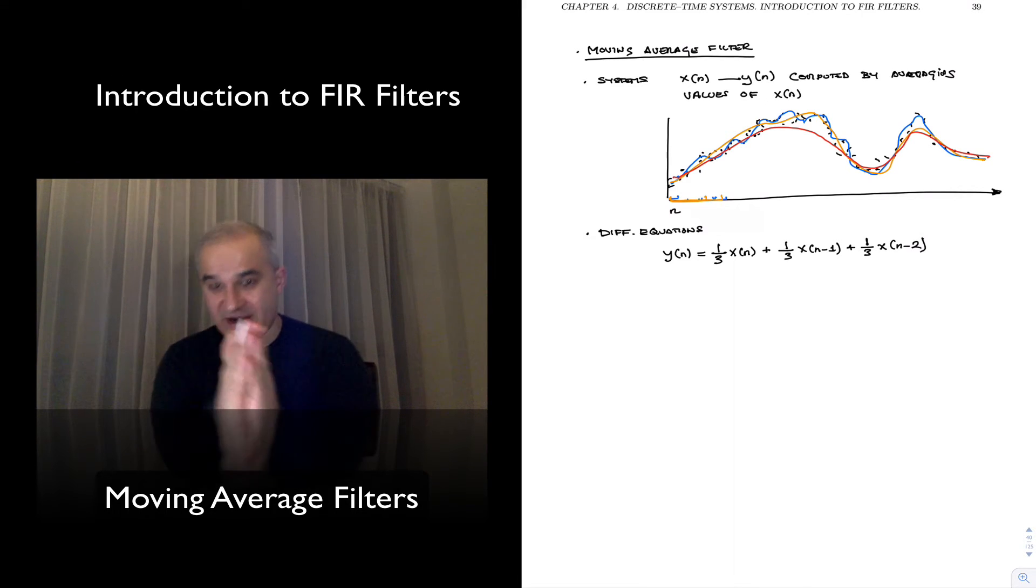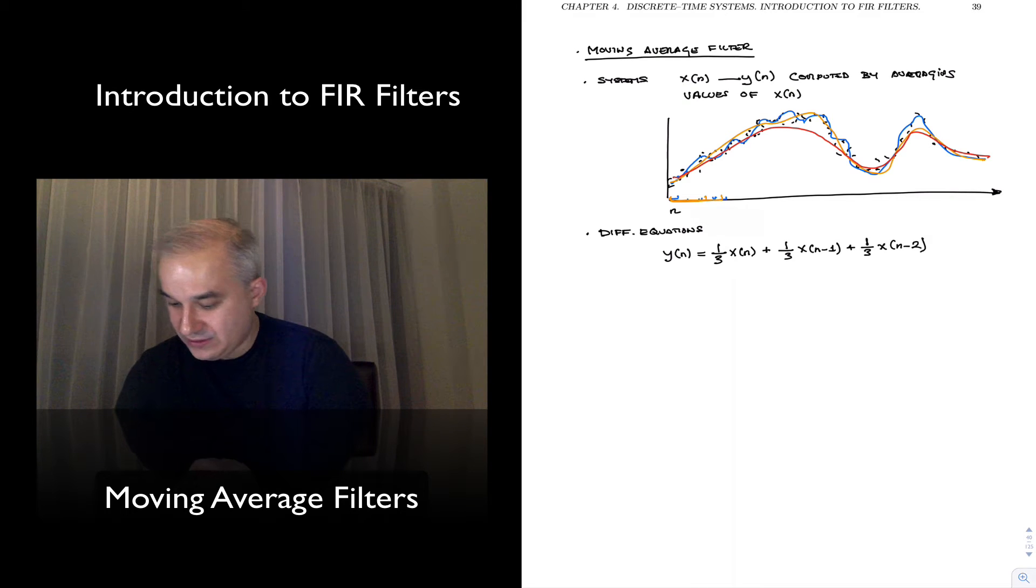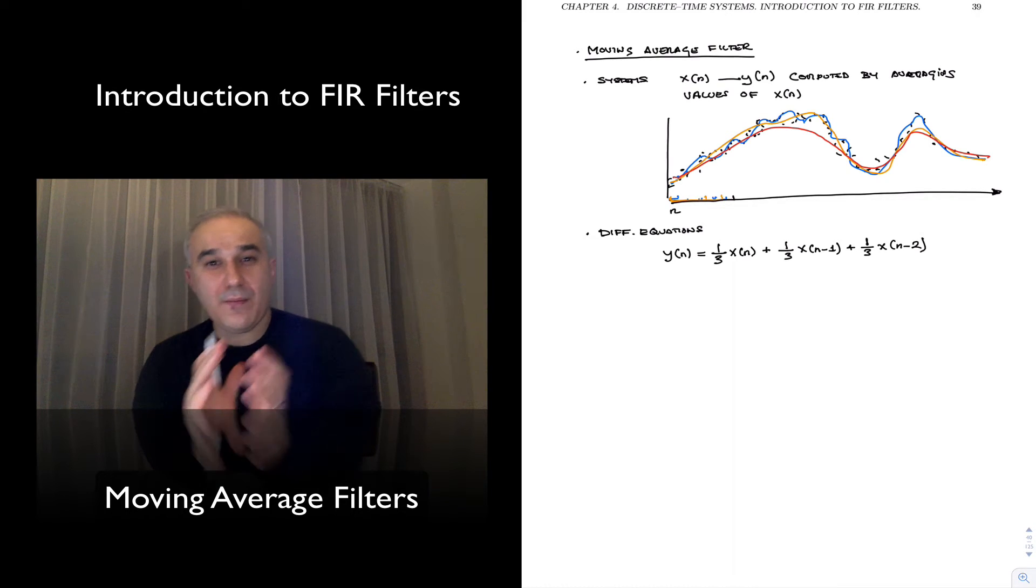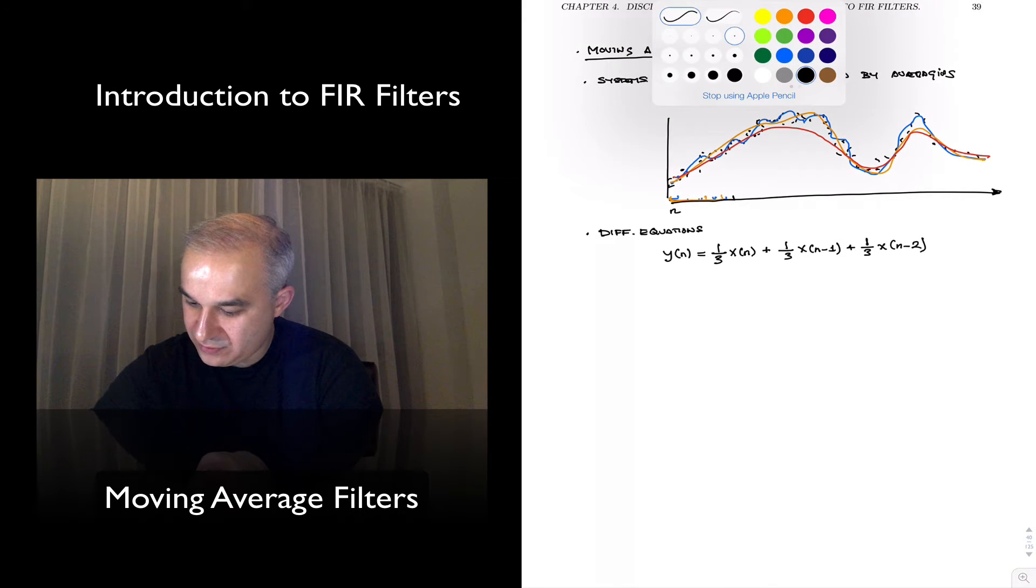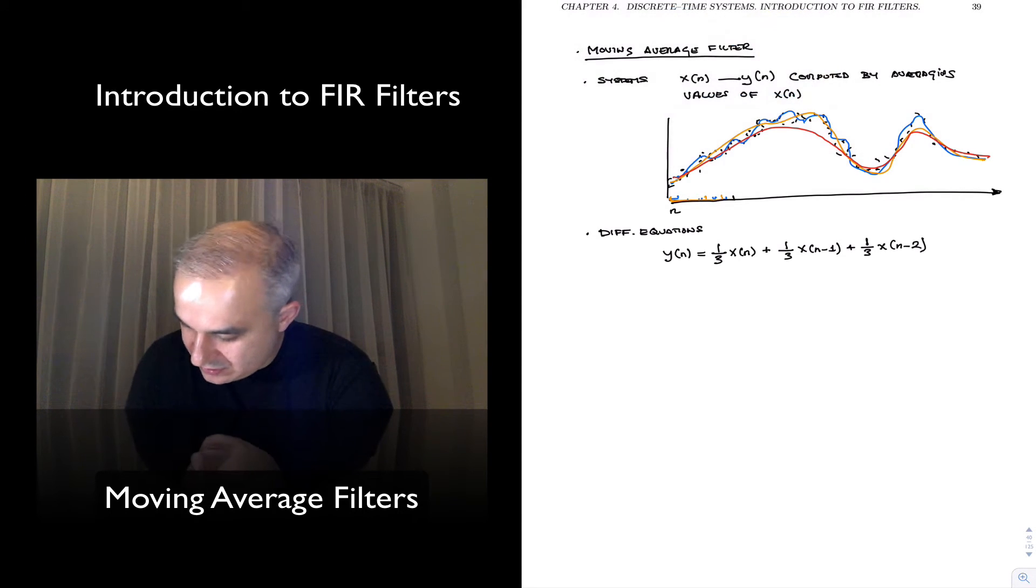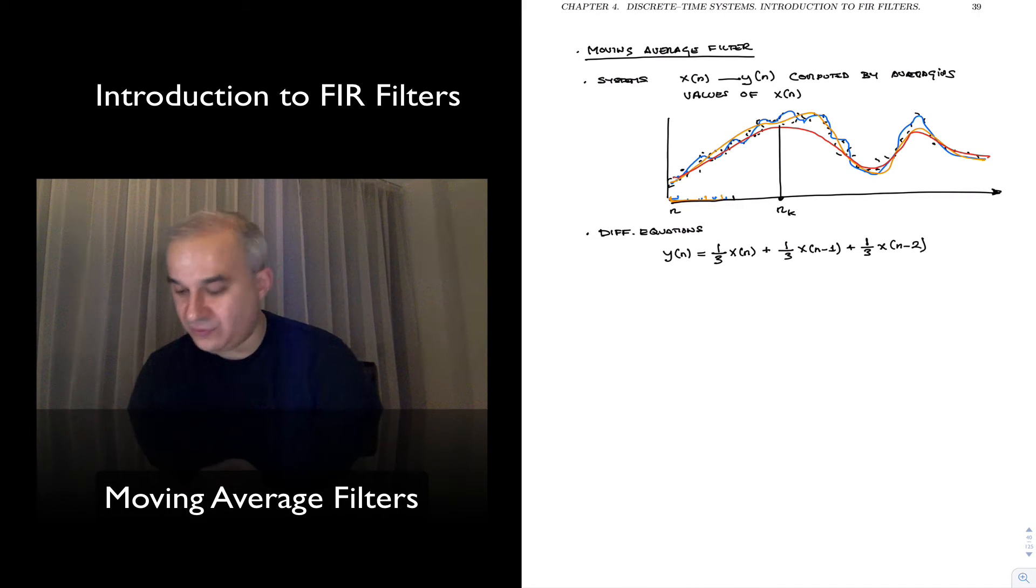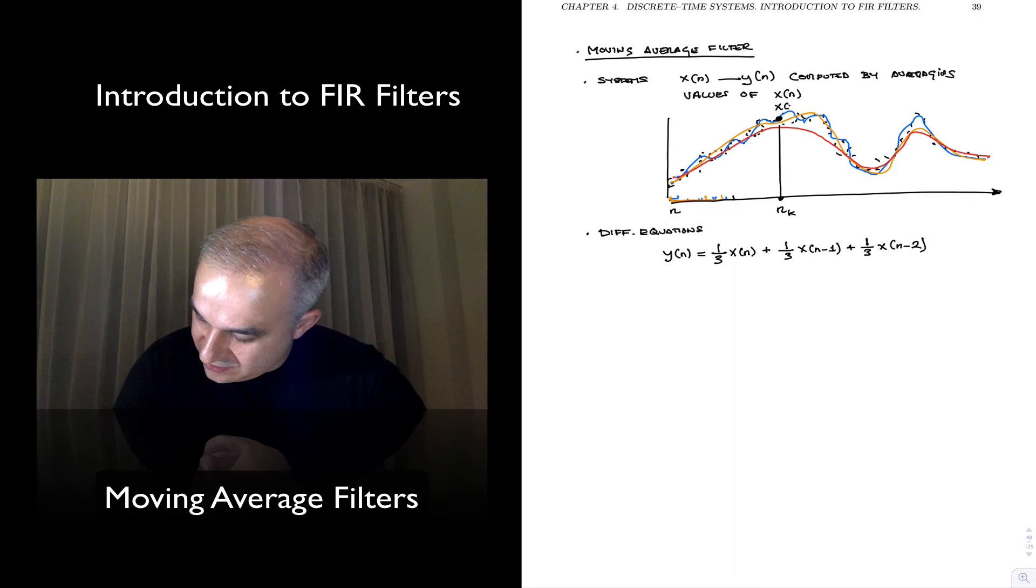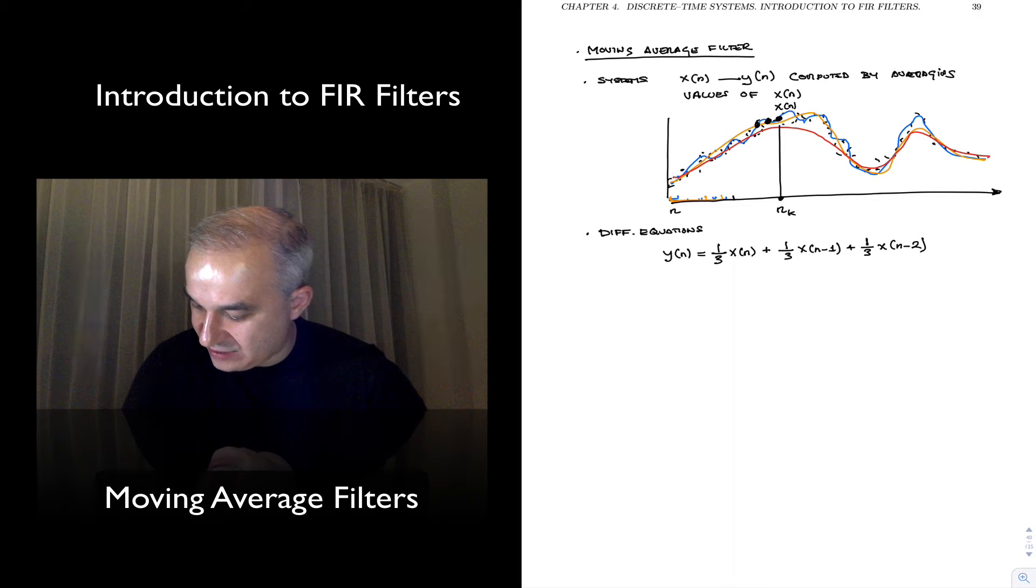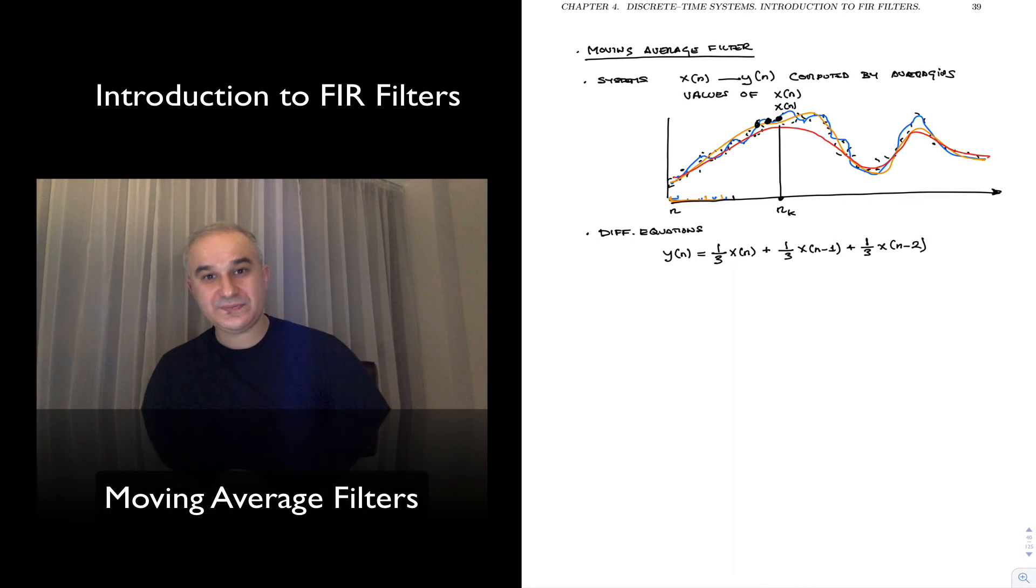Because n is a variable that is going to just keep going, right? This is a moving average filter. It's equivalent to picking three samples as we did before. At any point in time, if this is n, a particular nk, particular value, if that's your x of n, you pick that value, you pick the previous value, and you pick the previous value, and you compute the average.